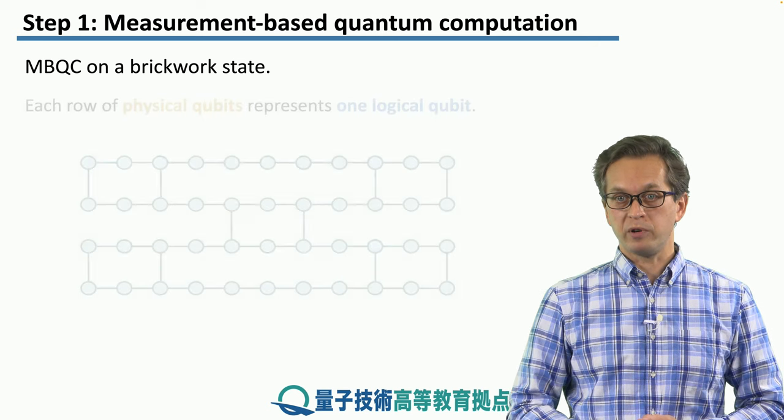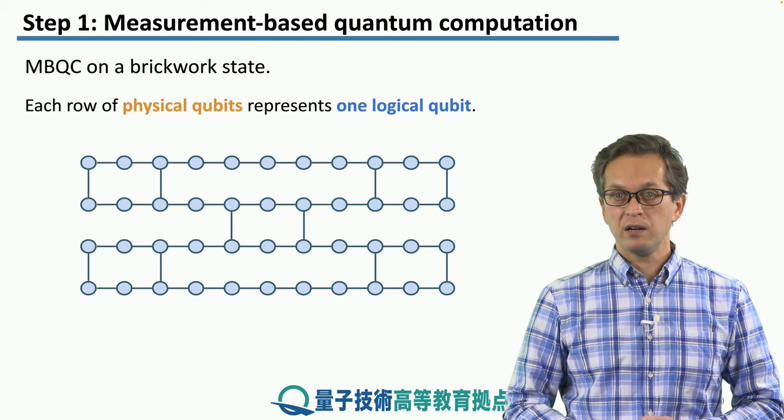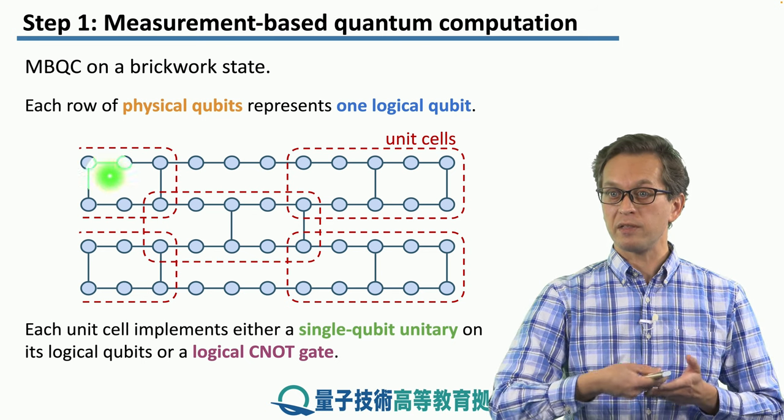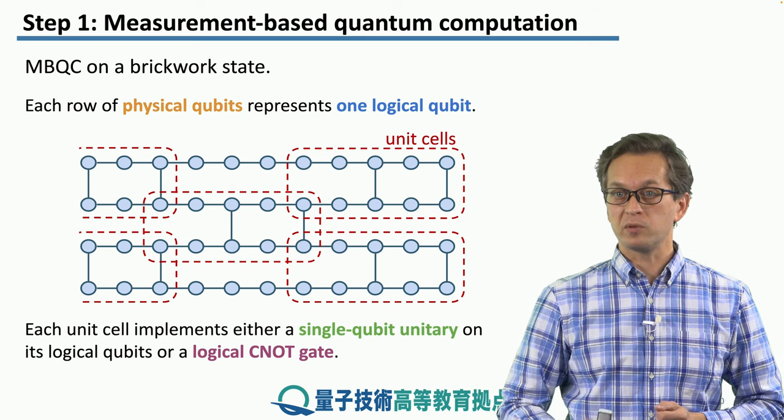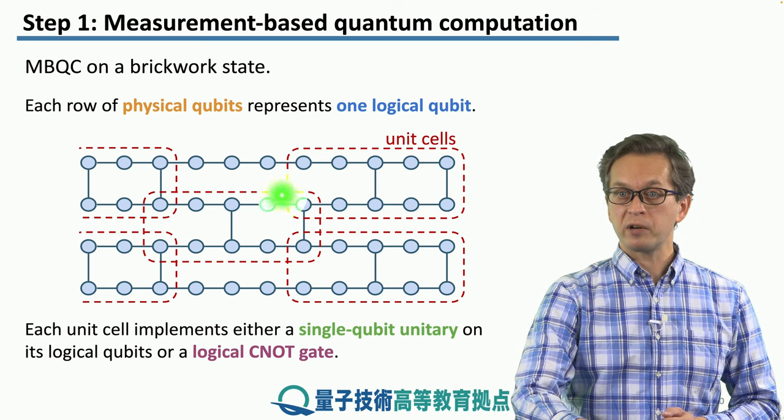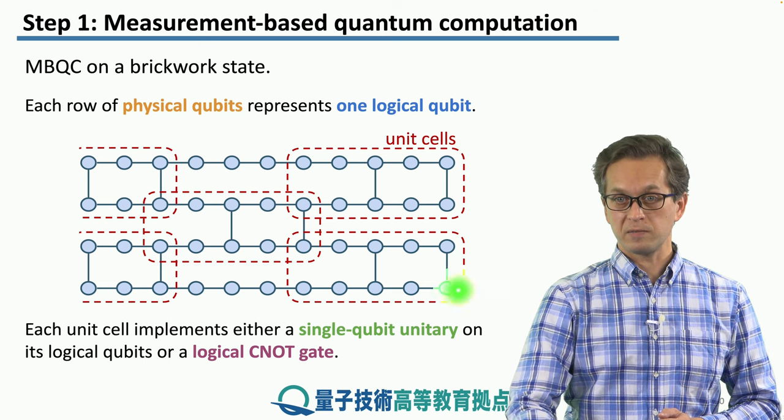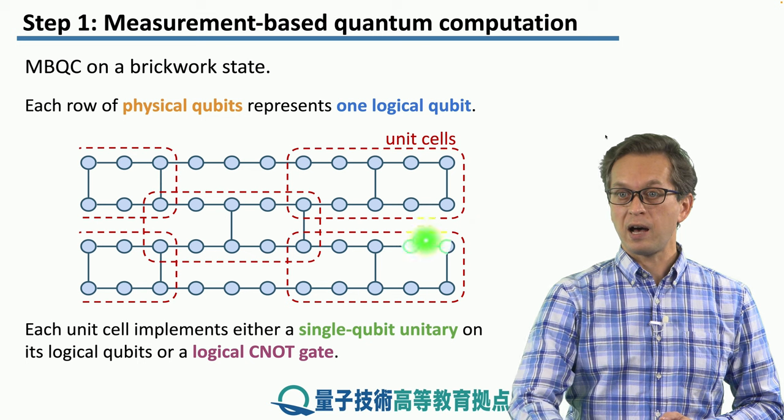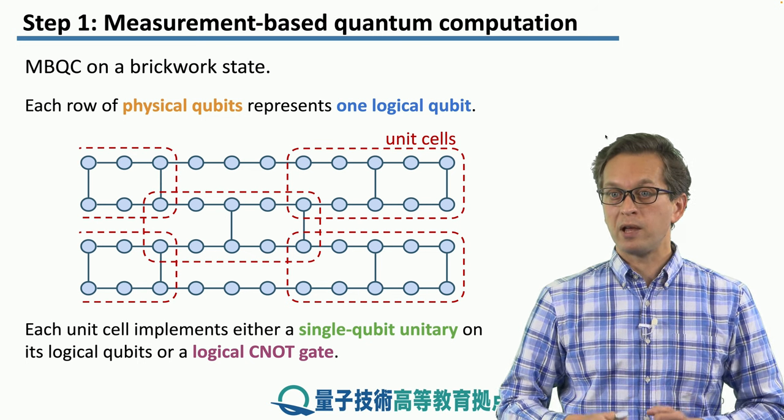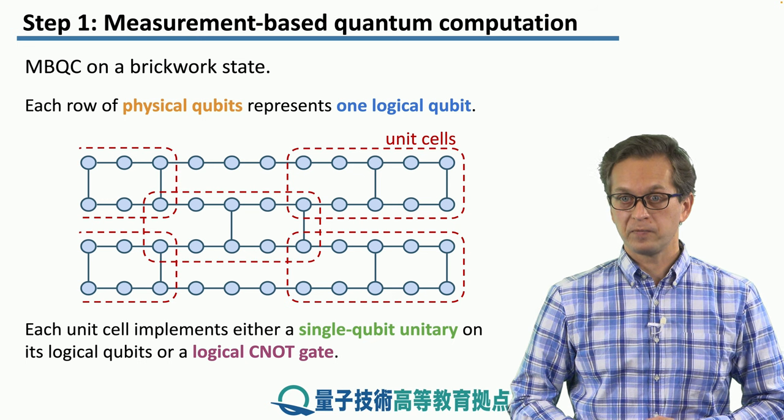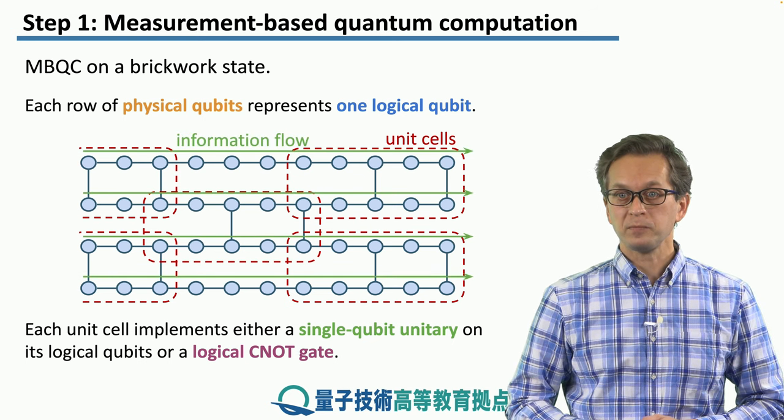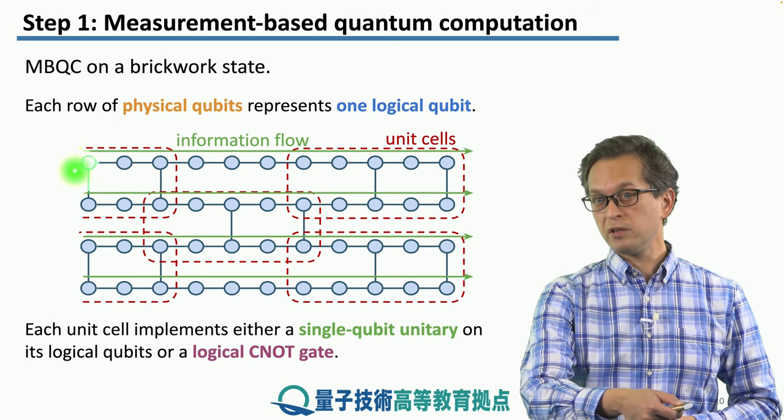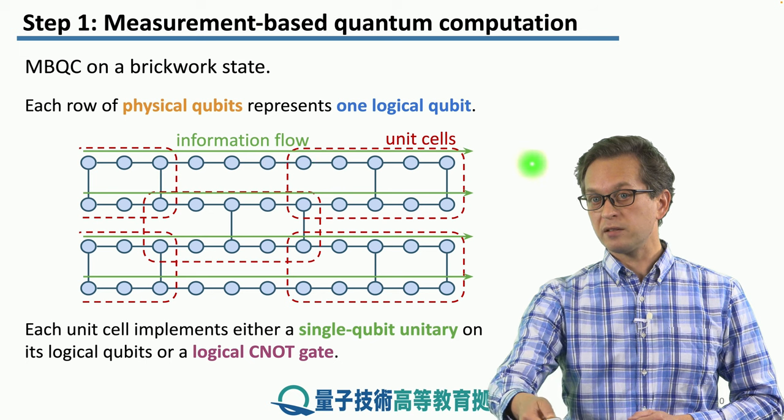So let's see how MBQC works on a brickwork state. Here, each row of physical qubits represents one logical qubit. So here, row one represents one qubit. You can think of this as your wire in a quantum circuit model. So over here, we have a brickwork state representing four logical qubits. And each of these red unit cells can perform either single qubit unitaries or apply a two qubit unitary. So let's see how that works. And the information usually flows from where we start measuring, usually on the left side, and it's propagated to the right side.